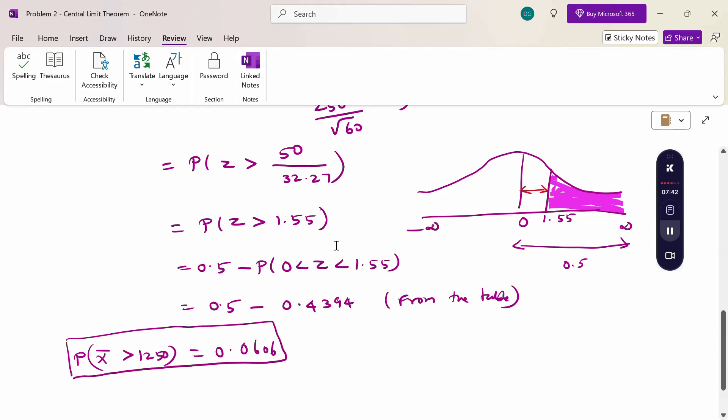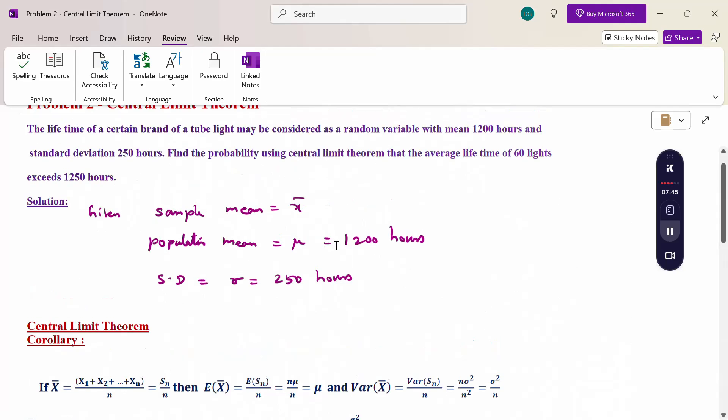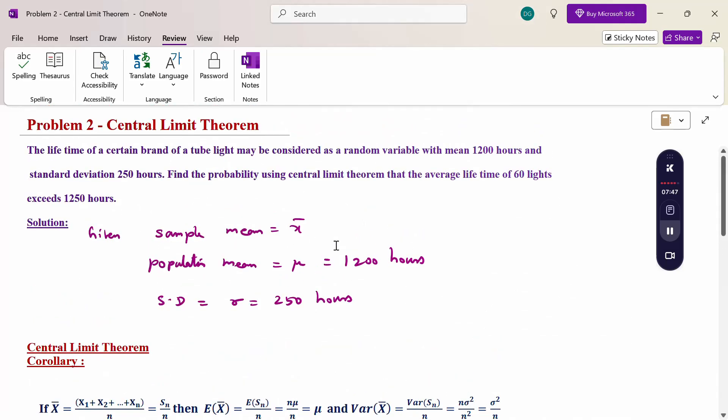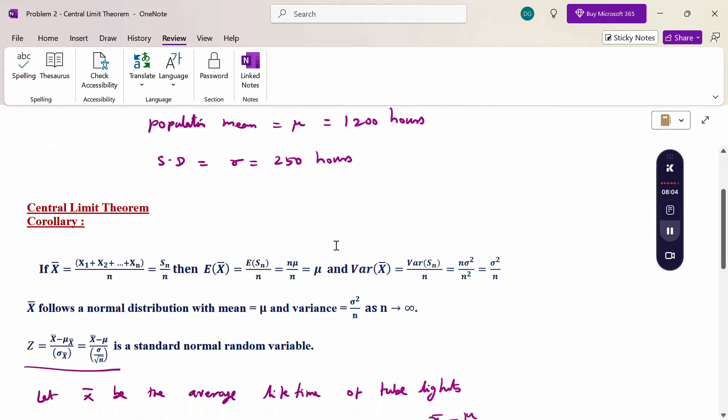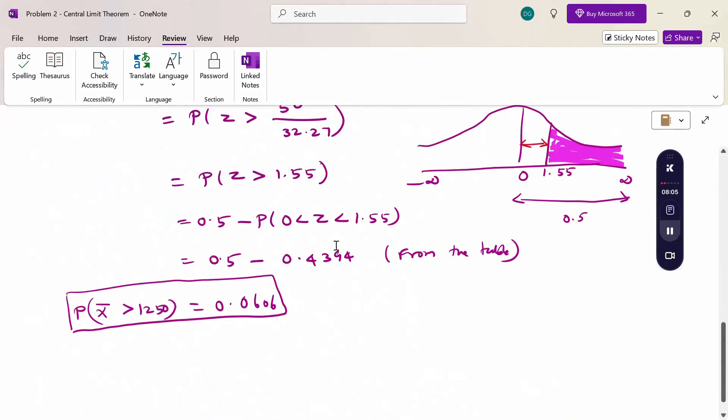This is the problem. If given the problem with sample mean and population mean, where population mean and standard deviation are given, first convert to z variable. Why? Because normal distribution table is available. From the table we choose the value. That's the reason we convert x variable or x bar variable into z variable. This is using central limit theorem. Thank you.